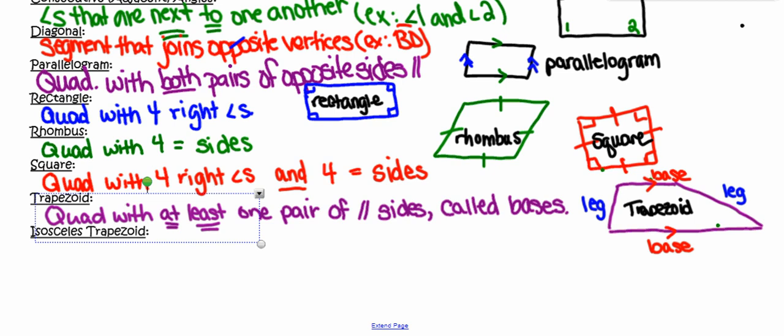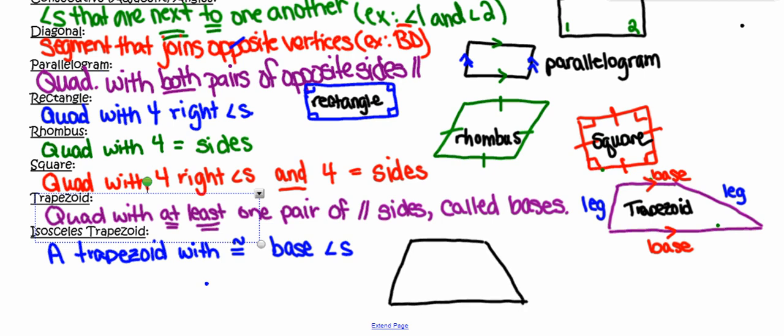An isosceles trapezoid on the other hand is going to be a trapezoid that has base angles that are congruent. So let me go ahead and get that definition in there and then we'll talk a little bit more about what base angles are and where we find them in the trapezoid. And this definition too if you google it might be different because if you had taken geometry with me 10 years ago this is not how we would have defined the isosceles trapezoid.